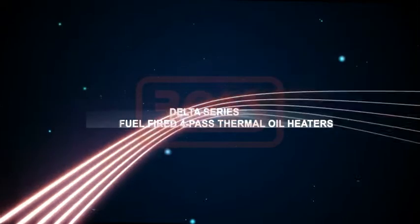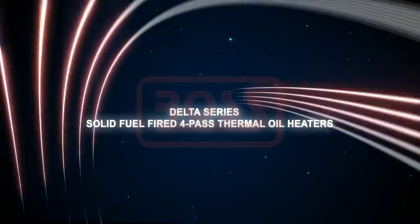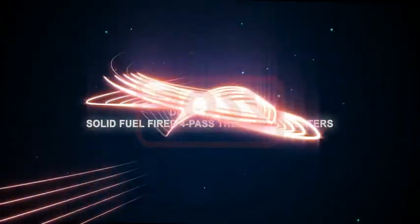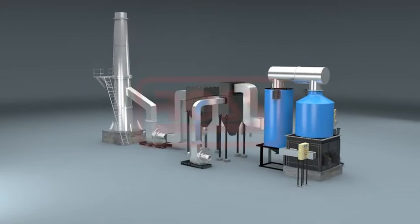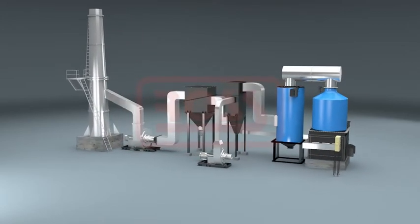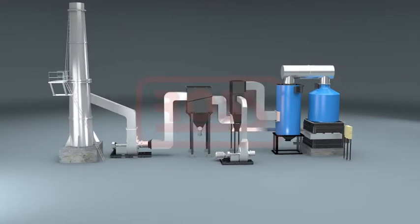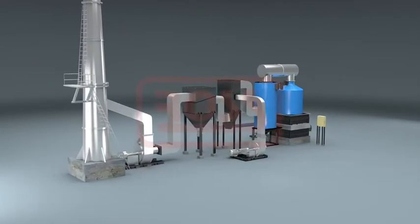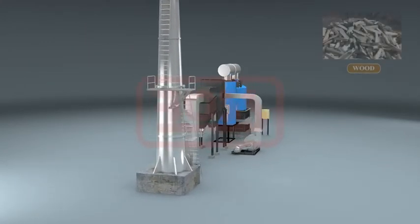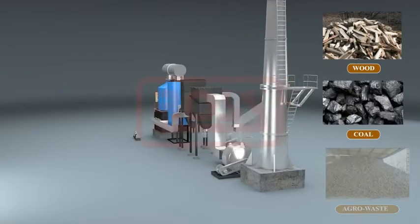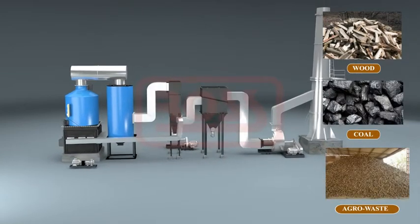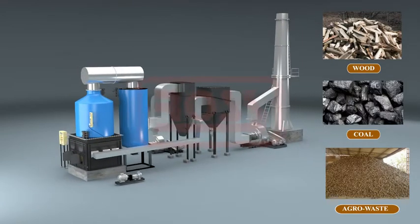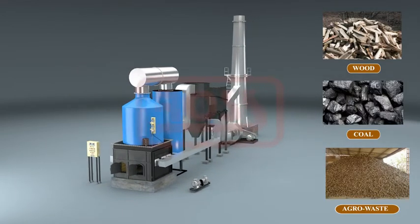Delta Series Solid Fuel-Fired 4-Pass Thermal Oil Heaters. Delta Series is an efficient 4-Pass Solid Fuel-Fired Thermal Oil Heater. These heaters run on solid fuels such as wood, coal, agro-waste pellets and briquets. These heaters are rugged in construction and have a long service life. They are easy to maintain and operate.